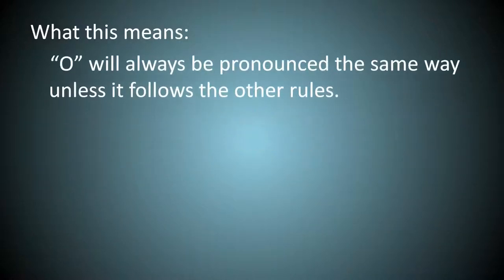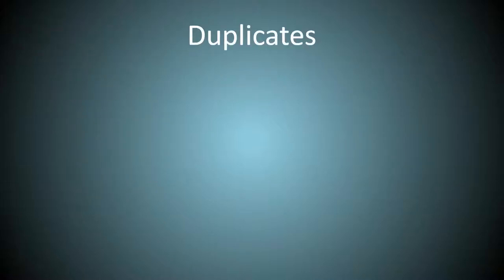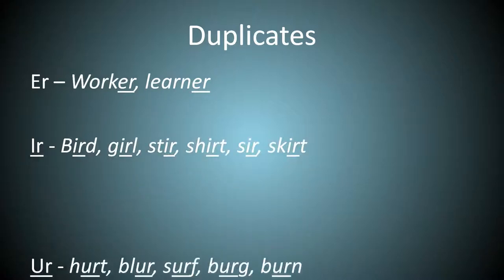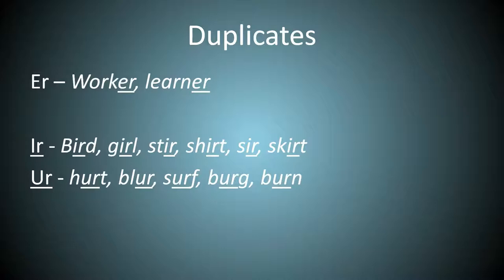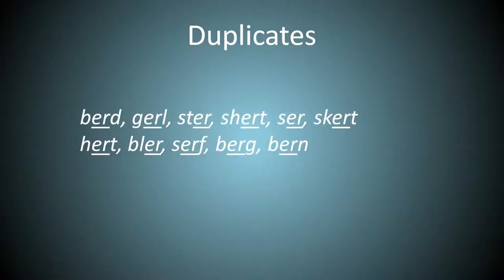So this means that O will always be pronounced the same way unless it follows the other rules. For example, DO and SO would be DO and SO, and therefore need to be changed. We already have some duplicate sounds. ER is pronounced ER like in learner. But then we have IR and UR. These use the exact same sound, and therefore I will replace them all with ER.